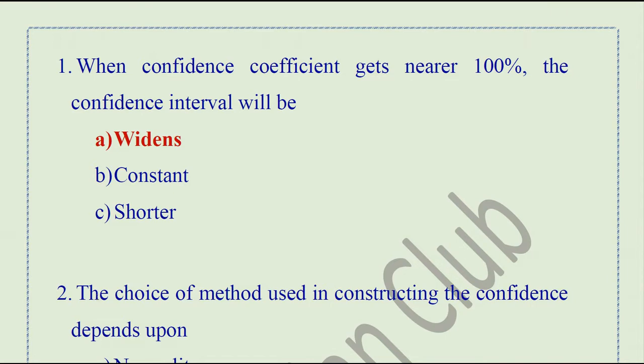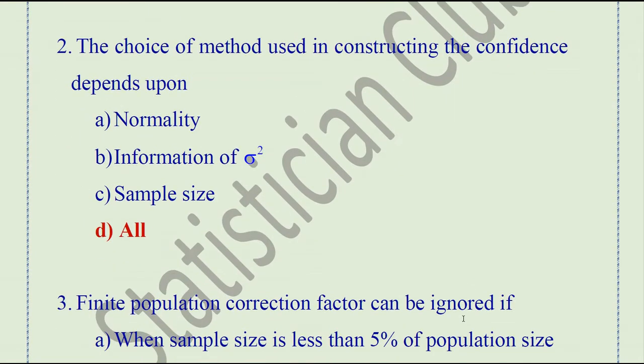Question number 2. The choice of method used in constructing the confidence interval depends upon: normality, information of sigma square, sample size, or all of the above. The right answer is 'all above,' because for the construction of a confidence interval, it depends upon normality, information of sigma square, and sample size. Based on these three criteria, we decide which confidence method to use.